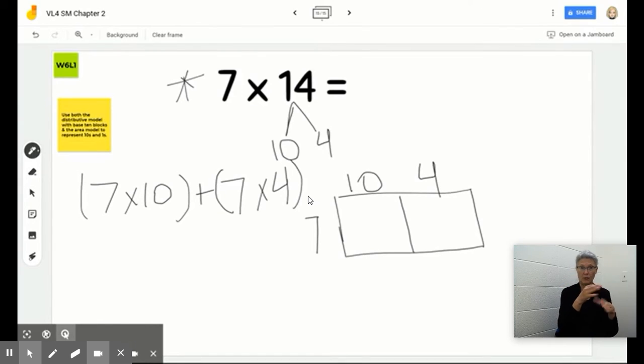7 times 10 is 70, so I can write it right here and I'm going to mirror that over here and place my partial product in the box. And then I know that 7 times 4 is 28.